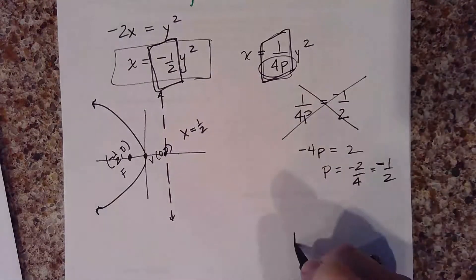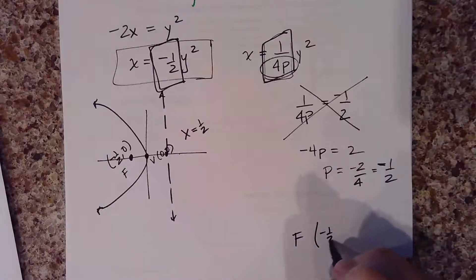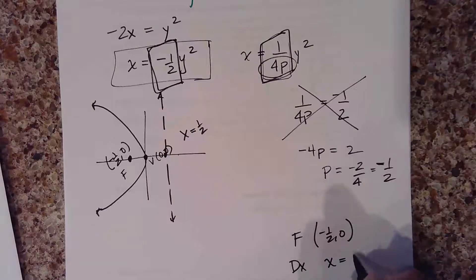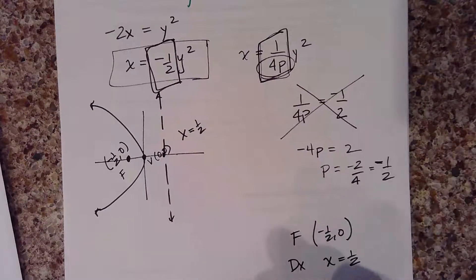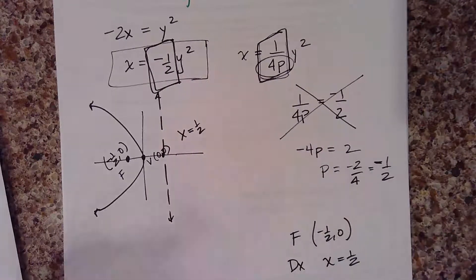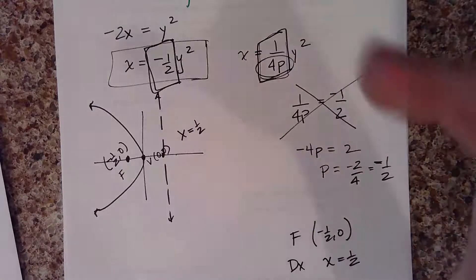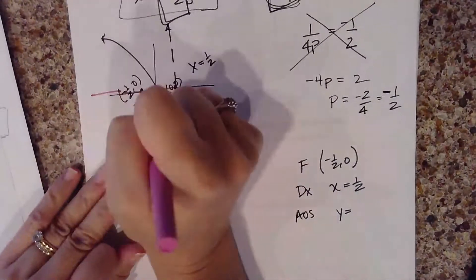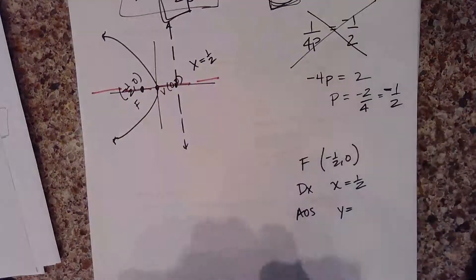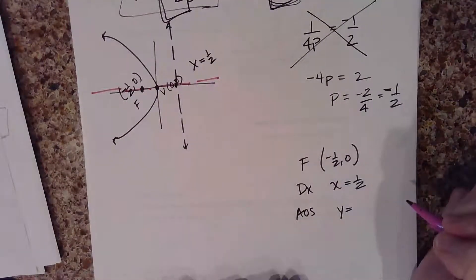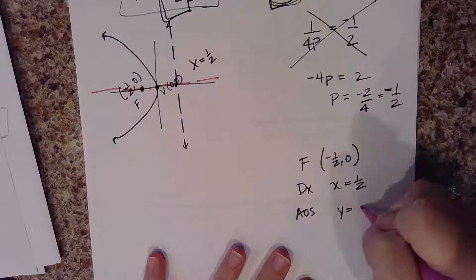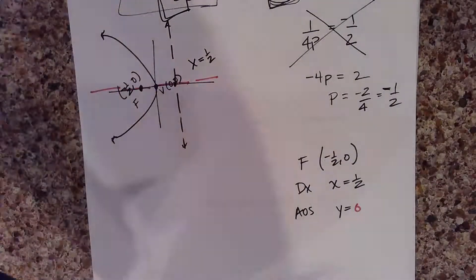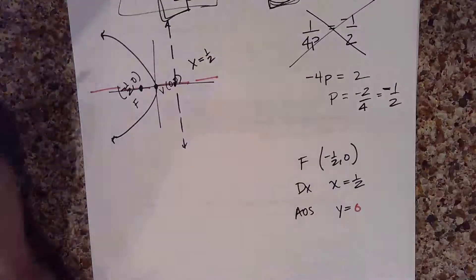It asks for the focus, directrix, and the axis of symmetry. The axis of symmetry is the line that goes right through the vertex. In this case, since the parabola is pointing sideways, it would be the y-value of your vertex, so y equals 0. And that would be your equation as well as finding your pieces of your function.